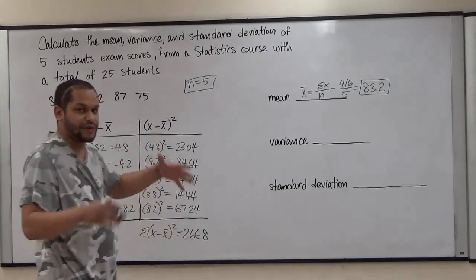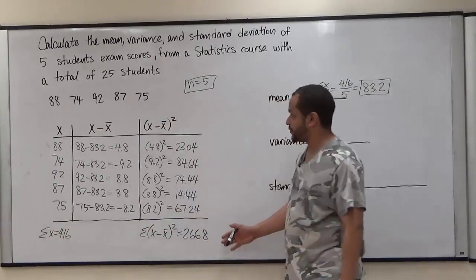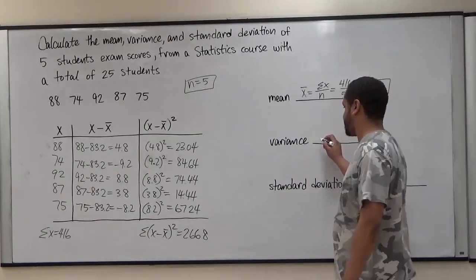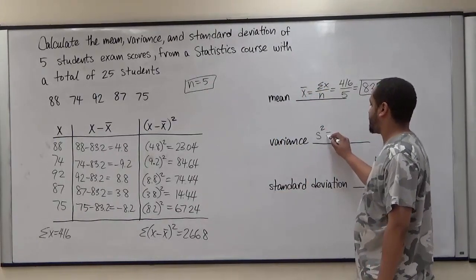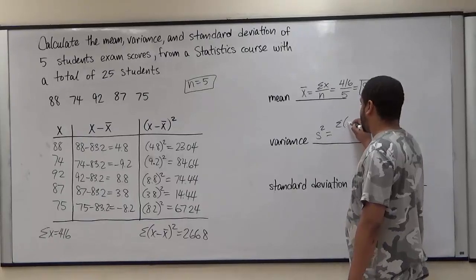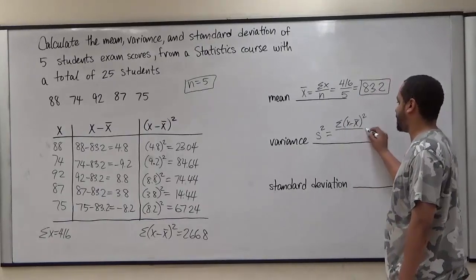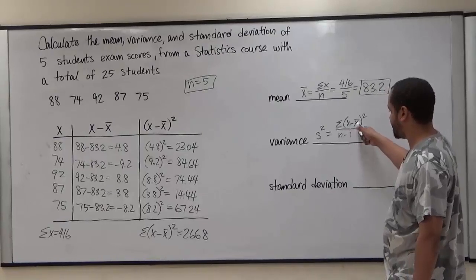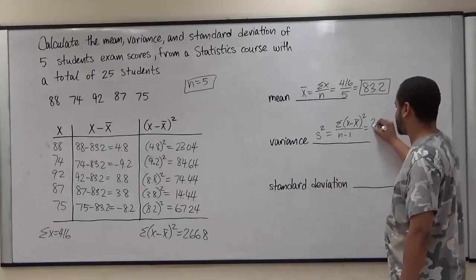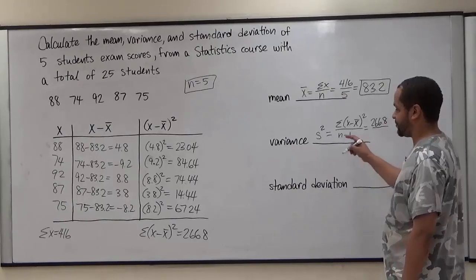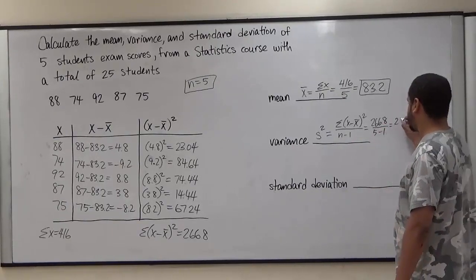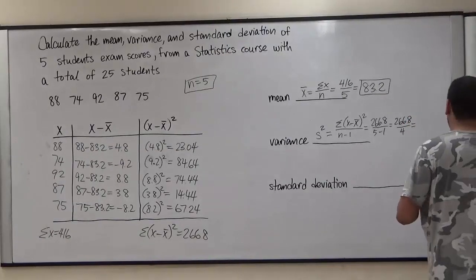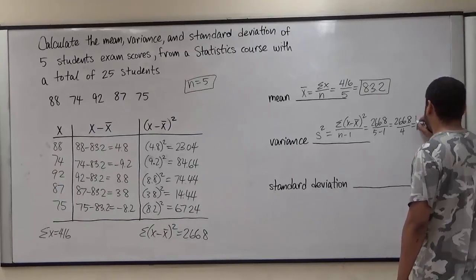This value of 266.8 is very useful — the variance and standard deviation are very dependent on it and on n minus 1. The notation for variance is s squared. To get s squared, we take the sum of (x minus x-bar) squared divided by n minus 1. That gives us 266.8 divided by 4, which equals 66.7. This is our variance.